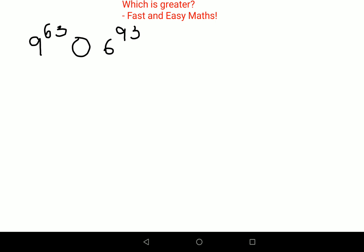This becomes 3 raised to 63 times 3 raised to 63, because 9 is nothing but 3 squared. And I can write this as 3 raised to 93 times 2 raised to 93.